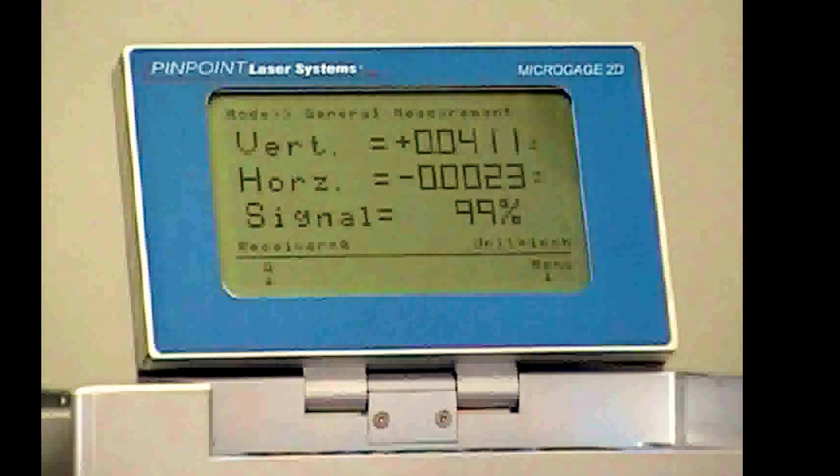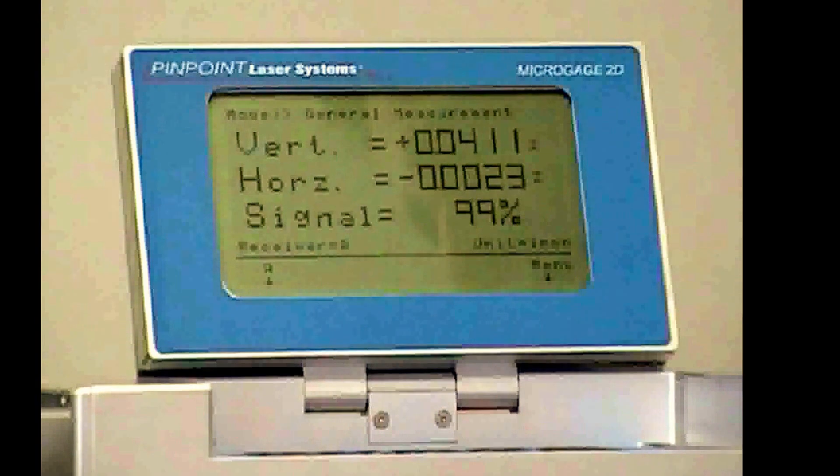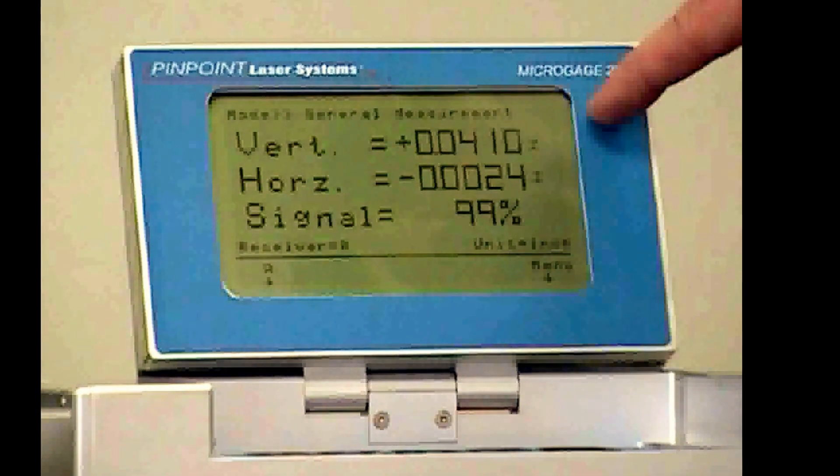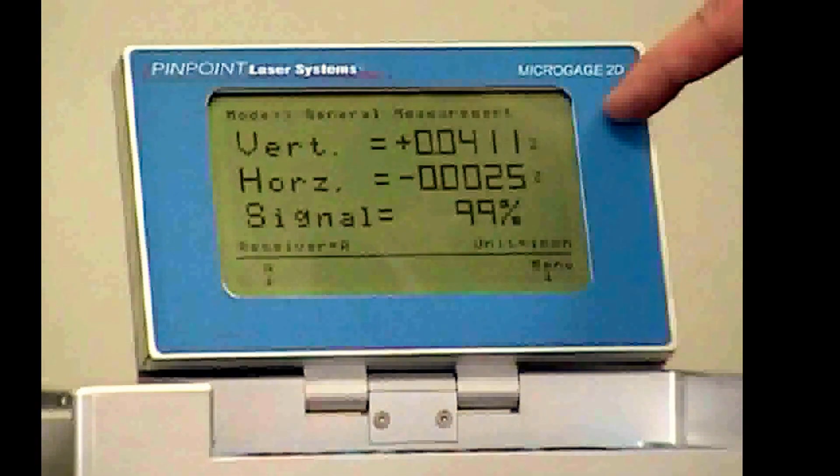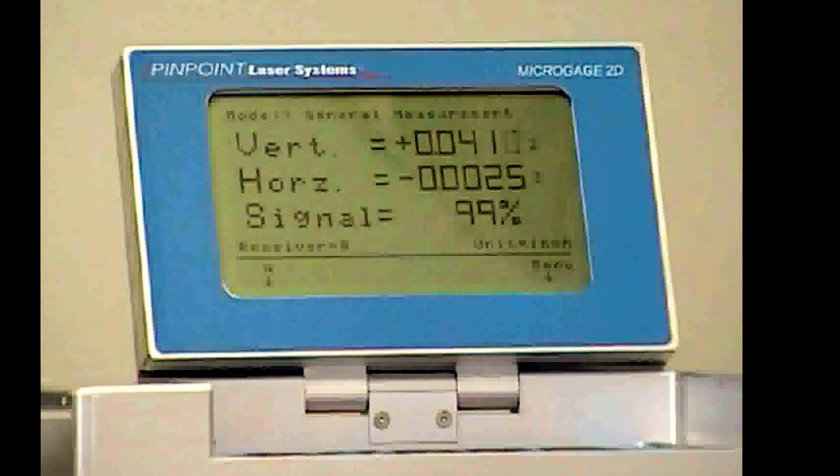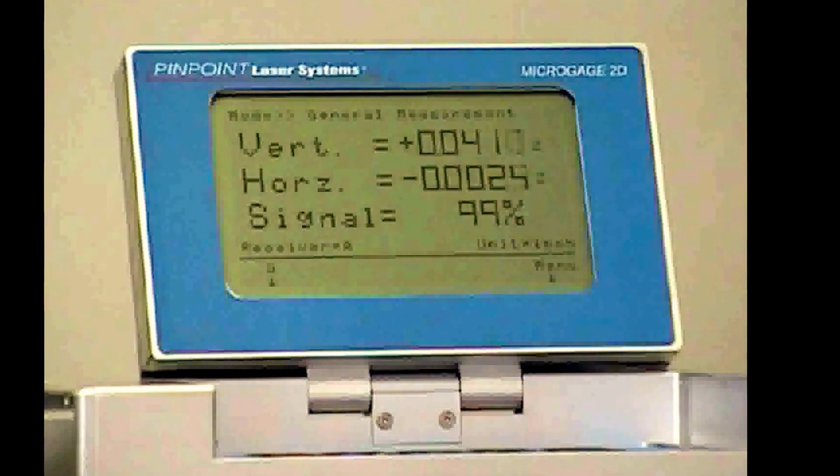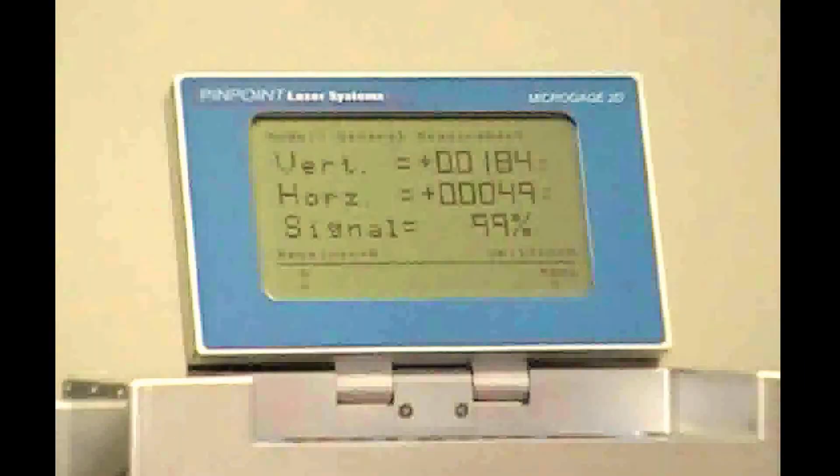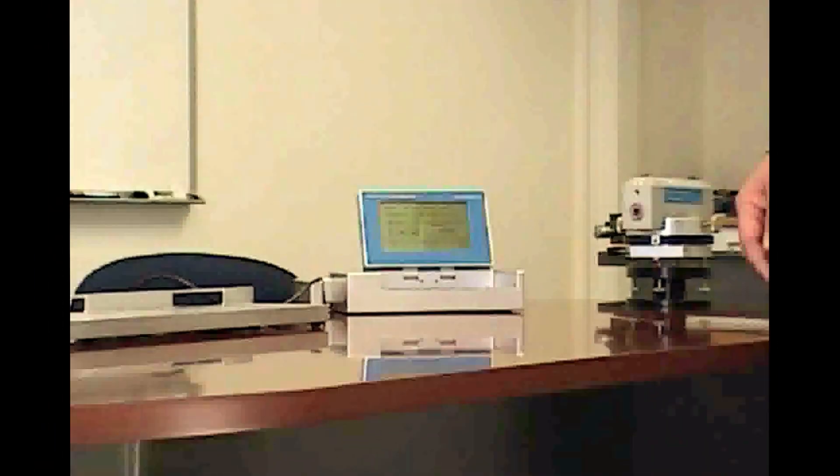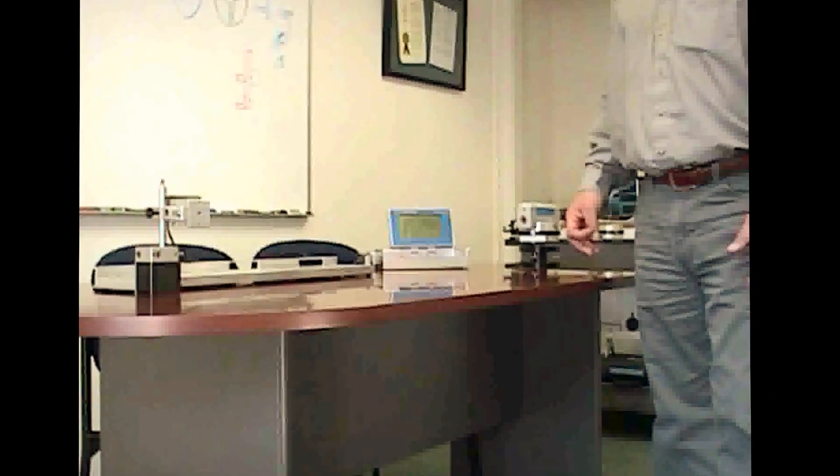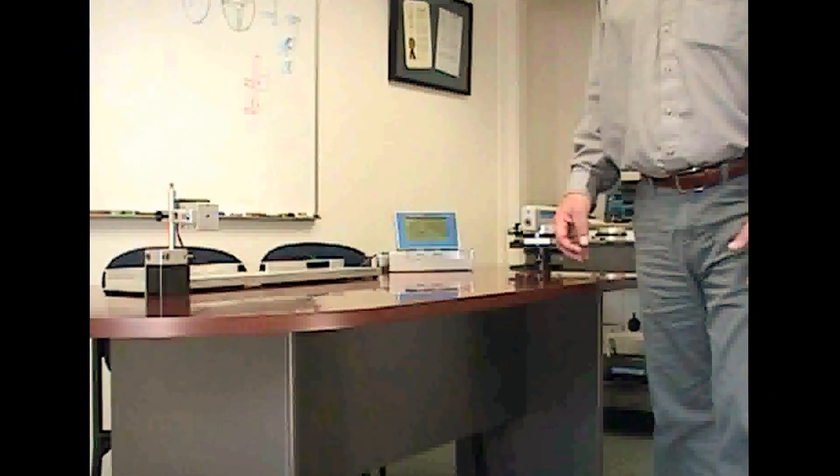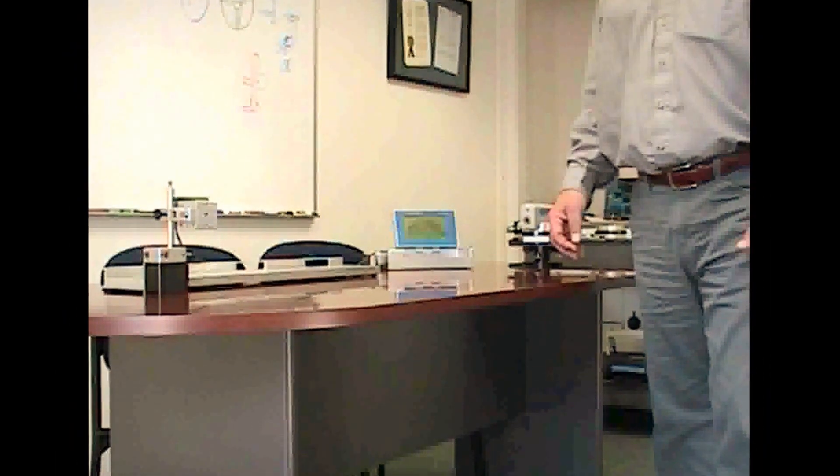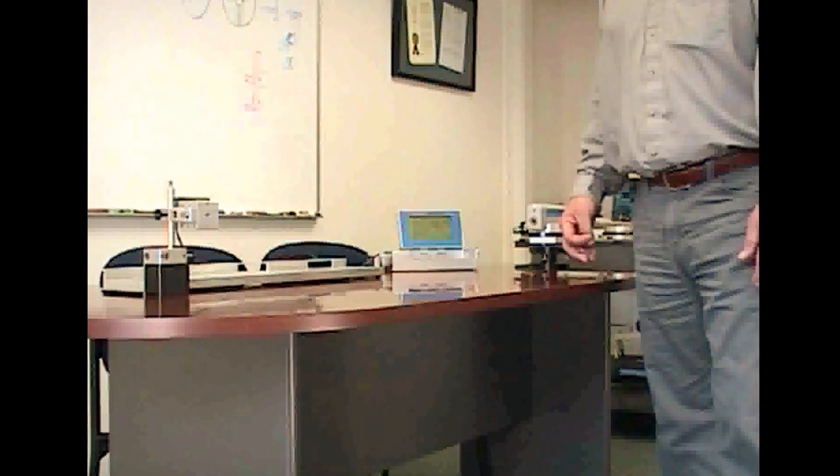If I wanted to do it vertically, I'm high on this end by about 40 thousandths. So what I could do is lower the beam using these screws so that I have the same readings in the front and the back. So that's how we buck in the laser and using the 2D, how we can make straightness and flatness checks with the system.